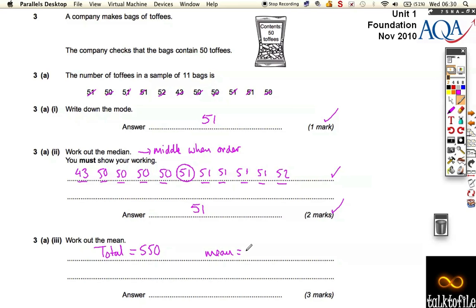So the mean is 550 divided by 11, and that comes out as exactly 50. So the mean calculation is 50, and that's worth three marks. You get one mark for getting the total, one mark for trying to divide that total by 11, and the final mark for getting it correct.